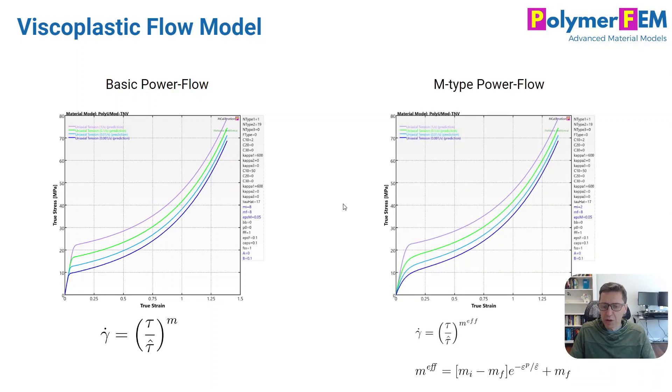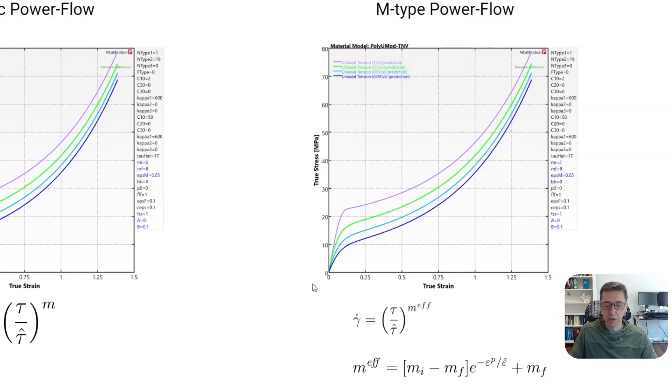To make it more strain rate dependent, a very quick and easy way that I've been knowing and using for a number of years now is to use this m factor strain dependent. So if I can make it go from an initial value of mi, in this case 2, to a final value of mf of 8 and I let it evolve over some characteristic strain, in this case is 0.05, I can get the modulus here that changes with strain rate without too much effort and then I can get the same large strain response later on. So it's a very quick fix.